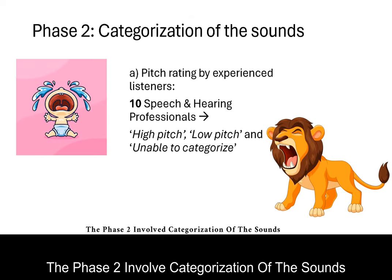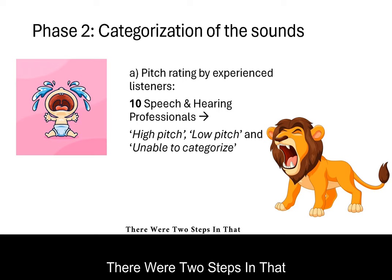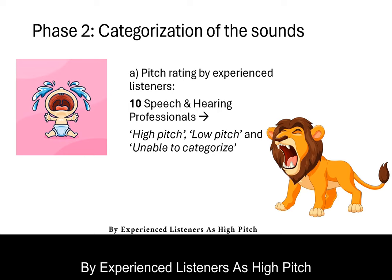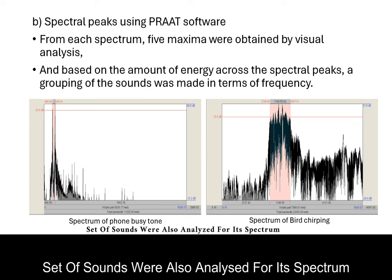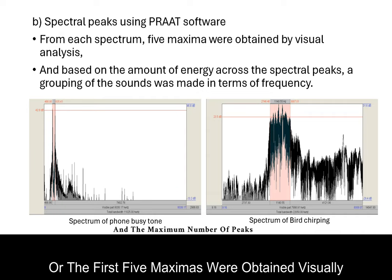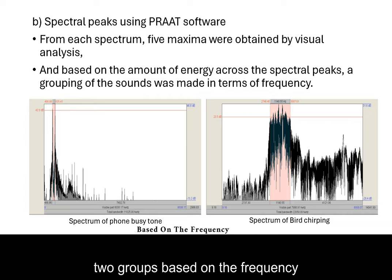Phase 2 involved categorization of sounds into low-frequency and high-frequency groups, with two steps. First, the pitch of the sounds was judged by experienced listeners as high pitch, low pitch, or unable to categorize. Second, the same sounds were analyzed for their spectrum and the maximum number of peaks. The first five maximas were obtained visually and then categorized into two groups based on frequency.